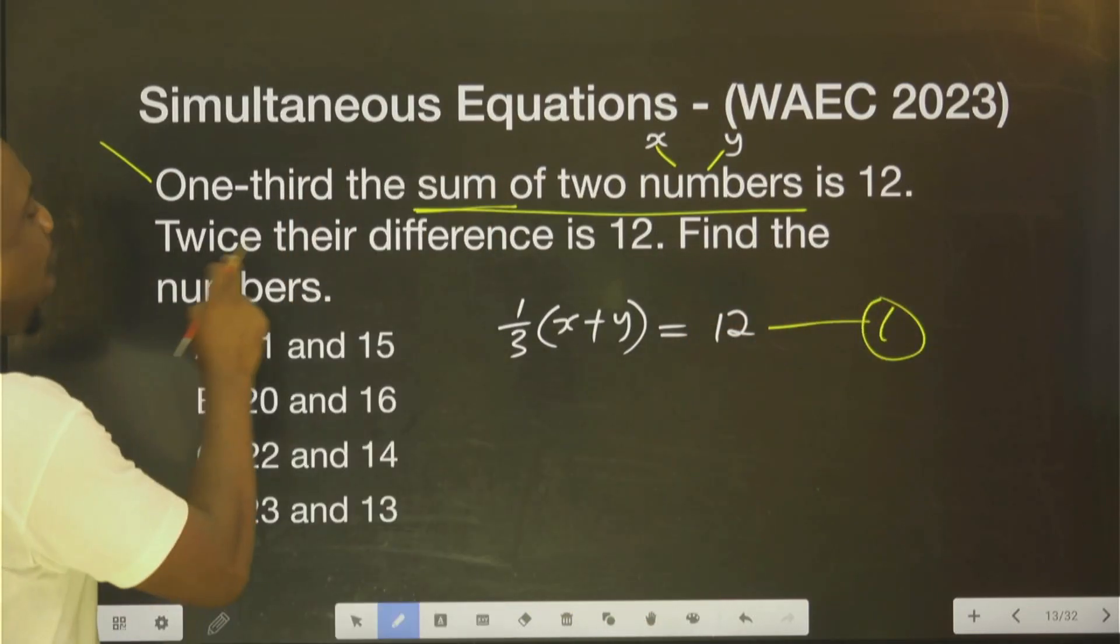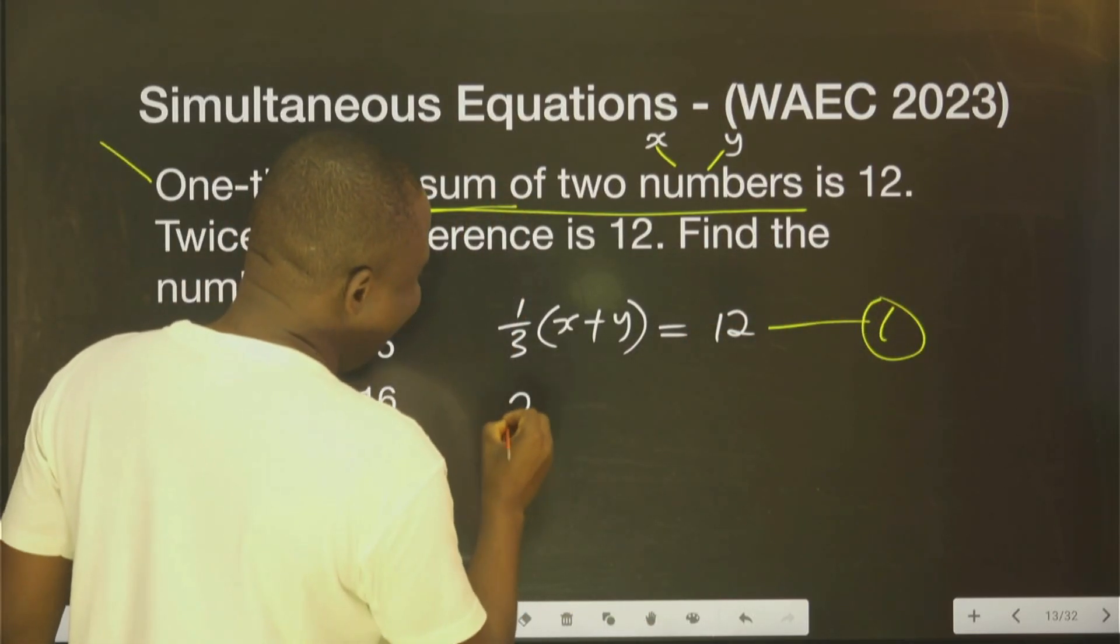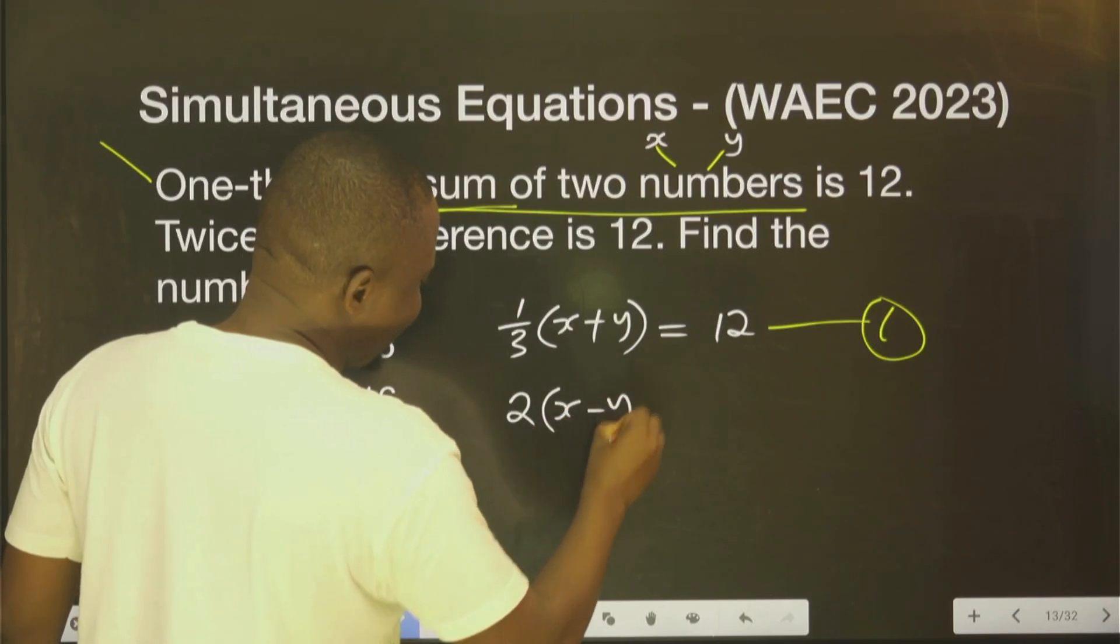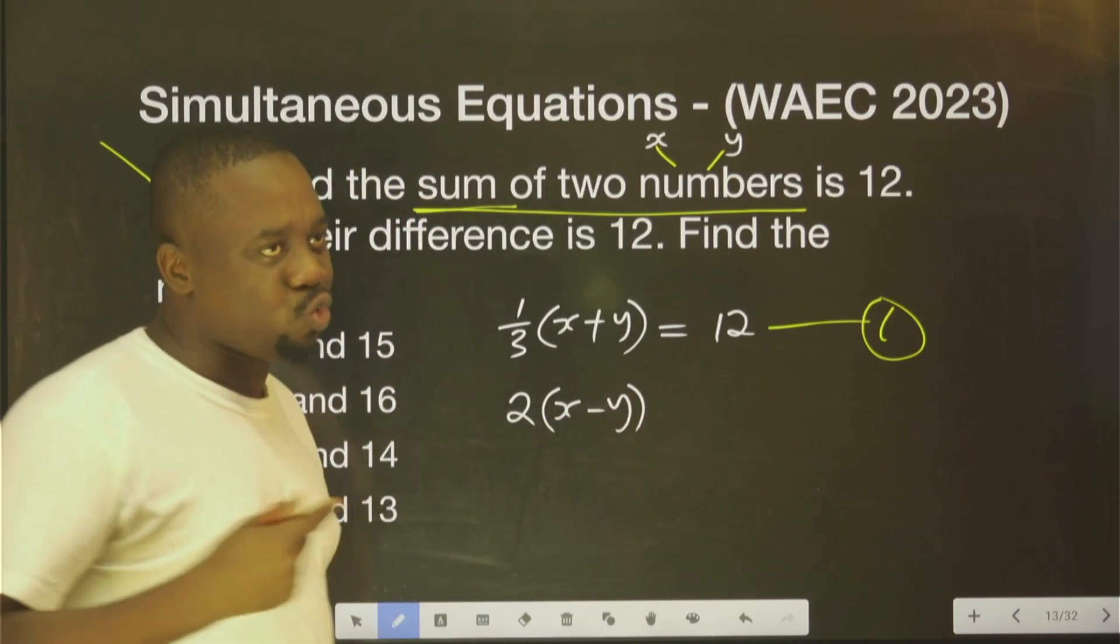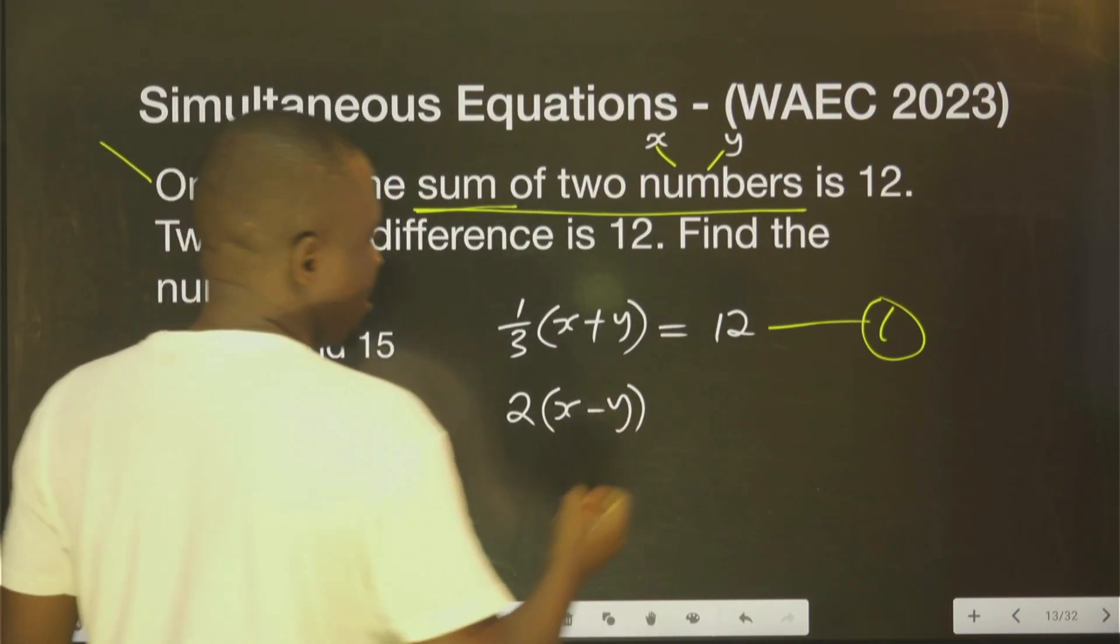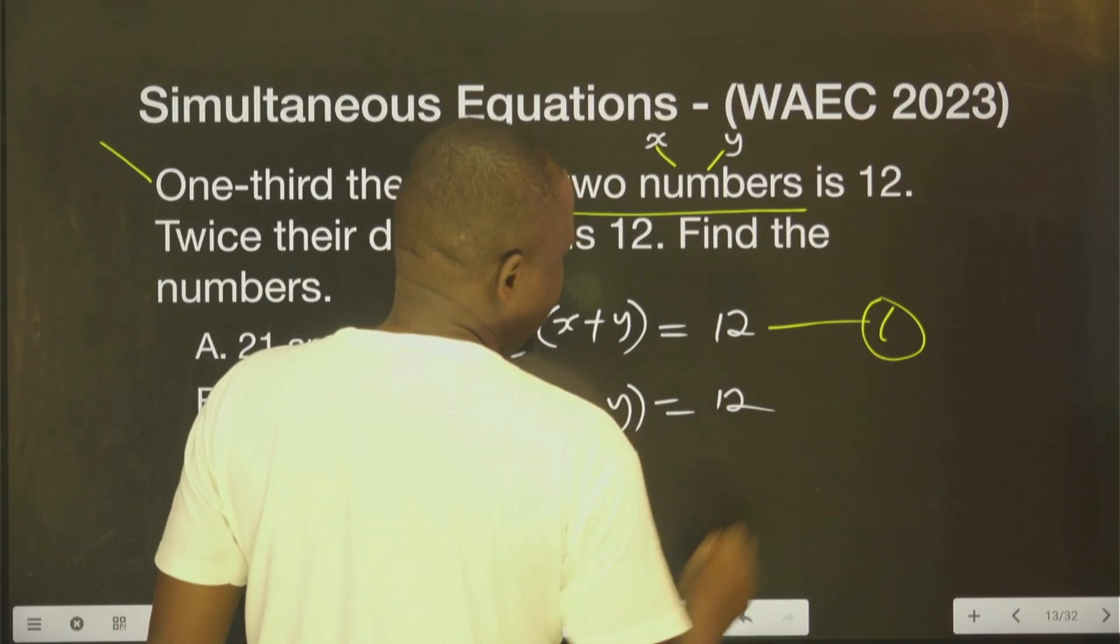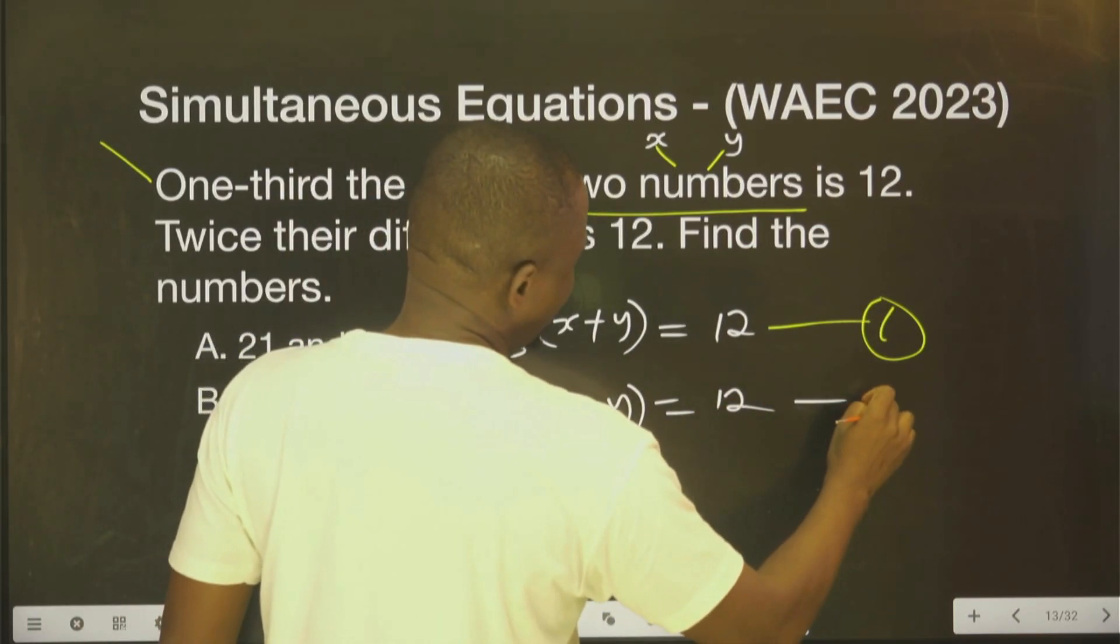Let's call this equation 1. Twice their difference. Twice their difference. This is difference: S minus Y. Difference, minus. It's also 12. We're going to call this one equation 2.